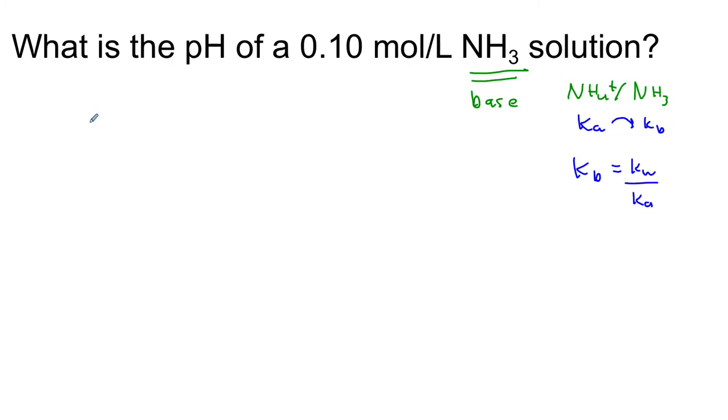So we're always going to get the same format for solving these weak base equations. To save doing an ICE table we need to realize that the concentration of hydroxide is going to equal the square root of the initial concentration of our base times the Kb which is Kw divided by Ka.